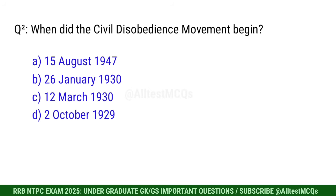Q2. When did the Civil Disobedience Movement begin? Correct option is C. 12th March 1930.